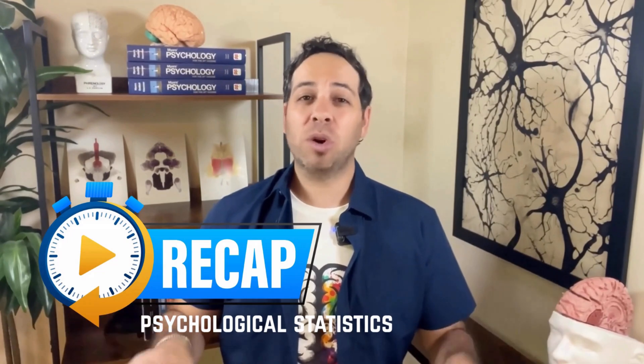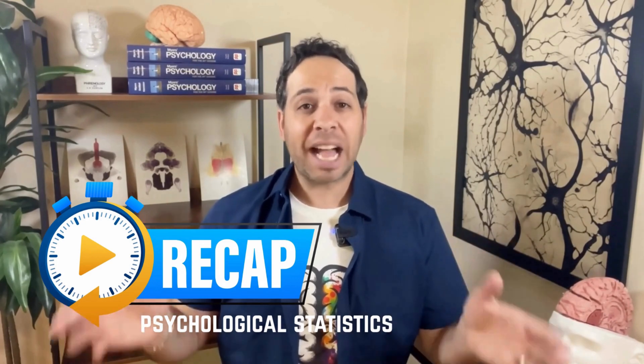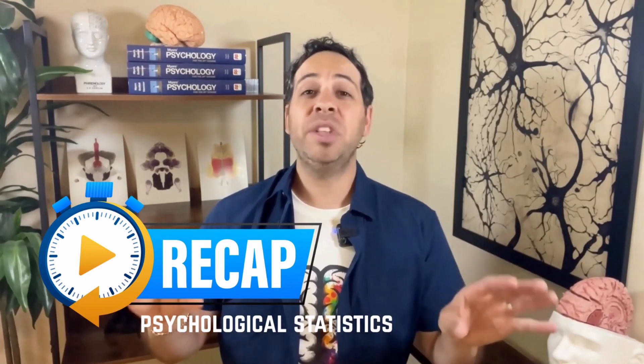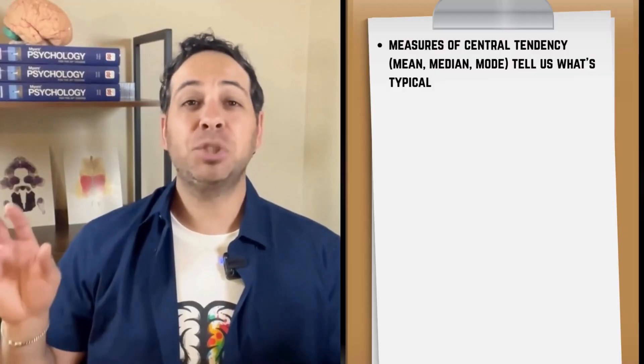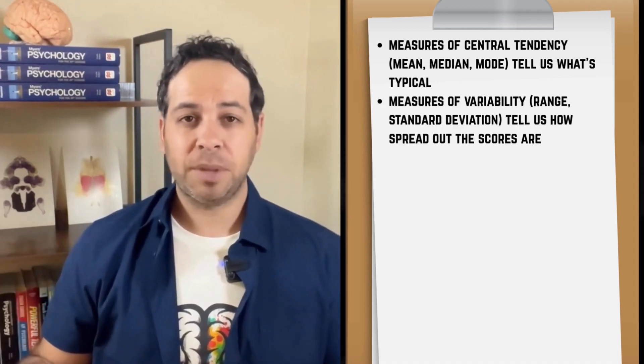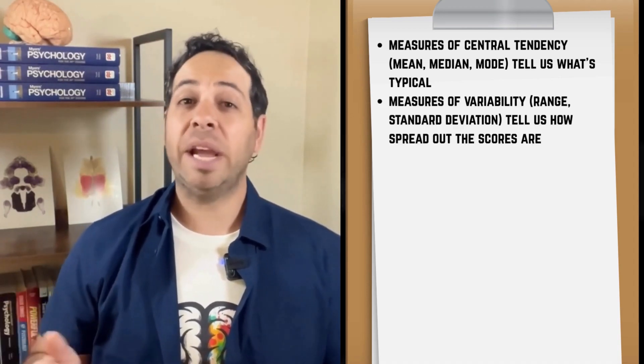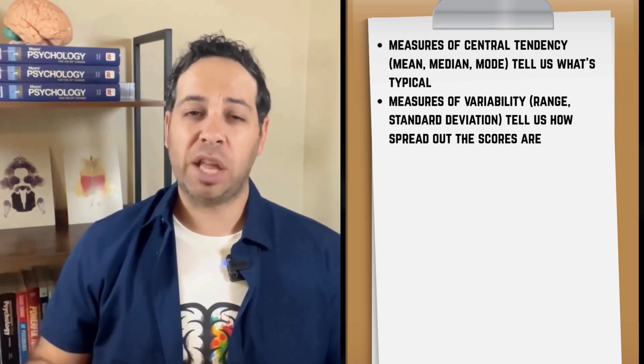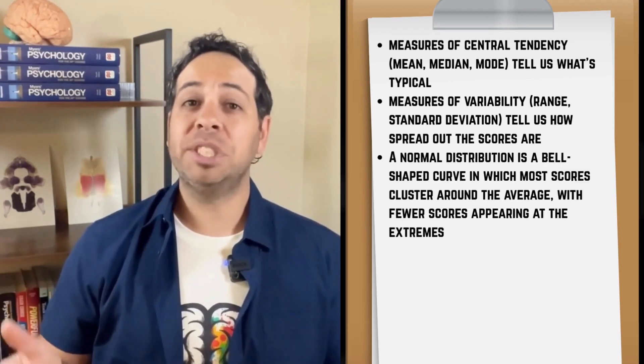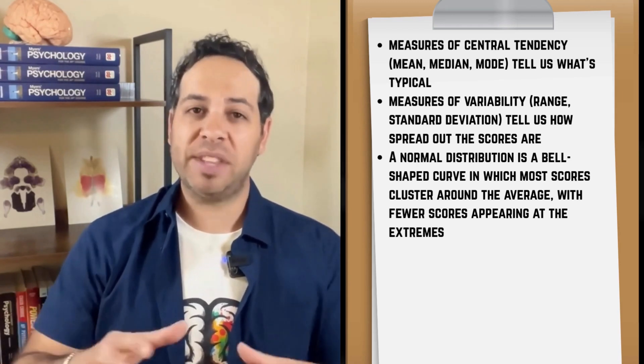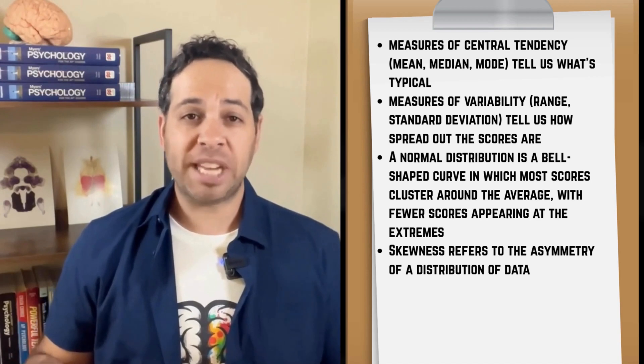Alright, let's lock in with a quick recap. We just explored the world of statistics and data interpretation, and how psychologists make sense of all the numbers they collect in their research. Tattoo this on your psych brain. Measures of central tendency, mean, median, and mode, tell us what's typical. Measures of variability, like range and standard deviation, tell us how spread out the scores are because averages alone don't tell the full story.